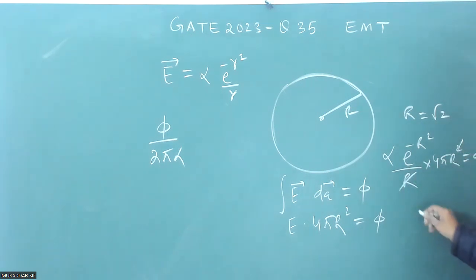R and R will cancel. And phi by 2 pi alpha, 2 pi alpha will be equal to 2 r e to the power minus R square, which is 2 root 2 e to the power minus 2. And when you calculate this value, it will be 0.38.